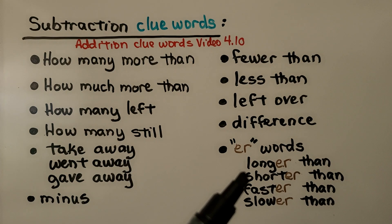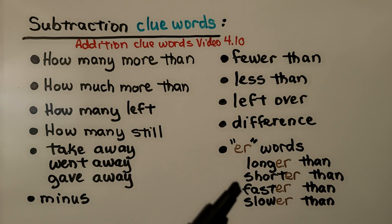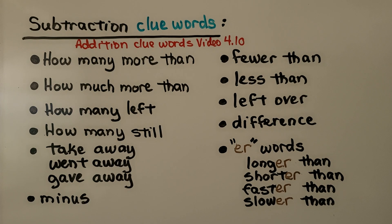More subtraction clue words include ER words: longer than, shorter than, faster than, slower than. Those are all clue words indicating that the operation we need to use is subtraction.